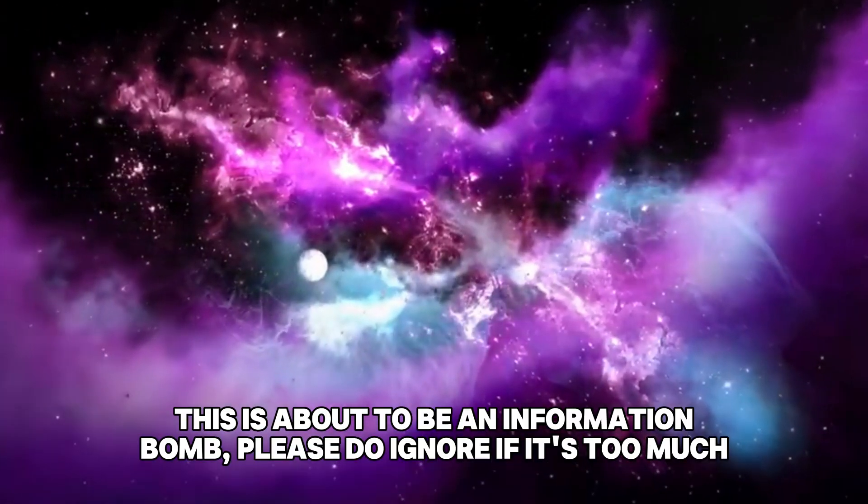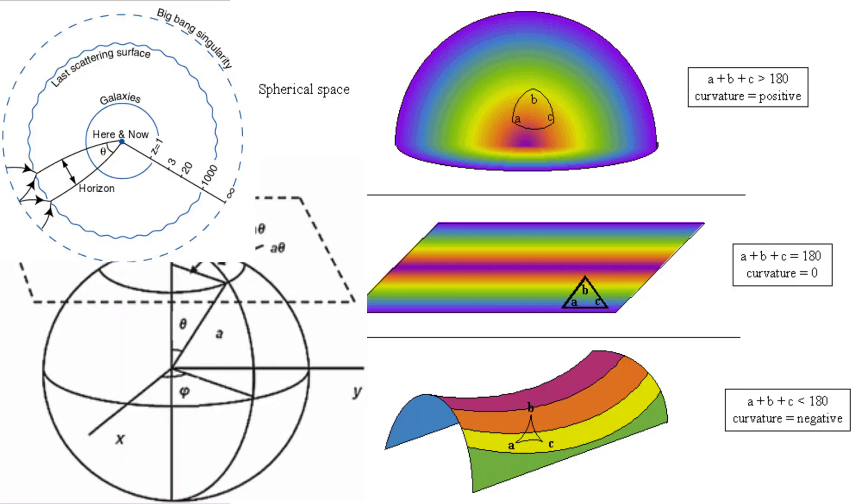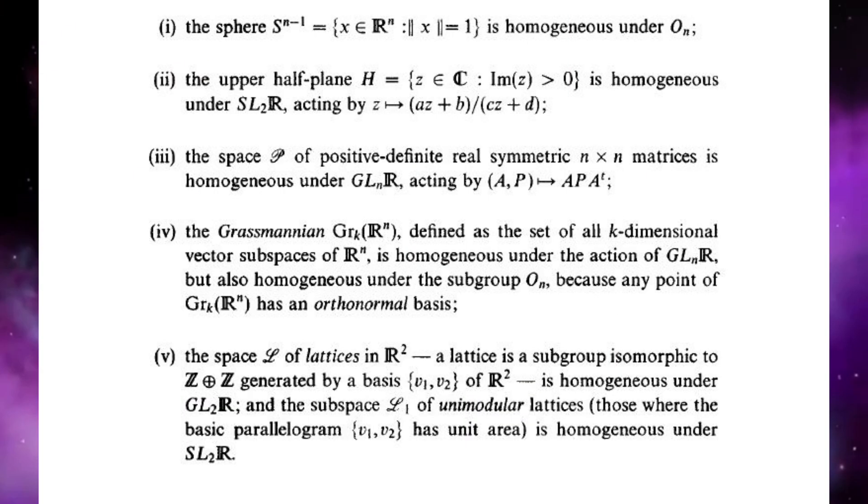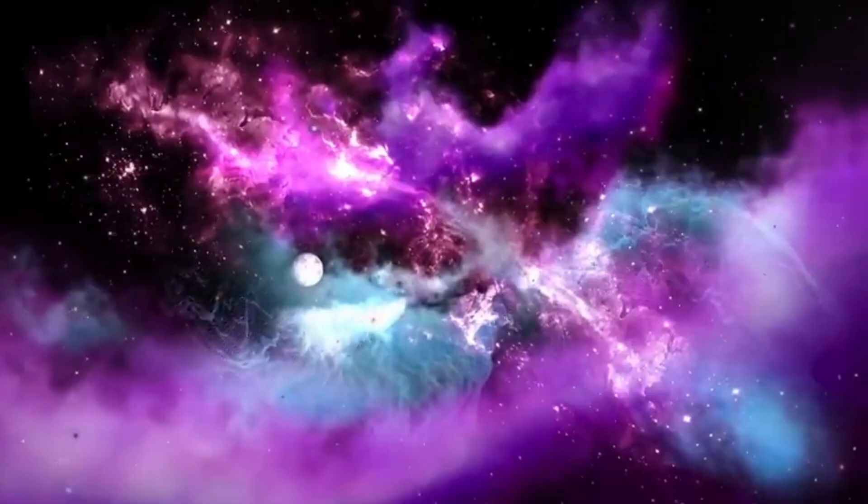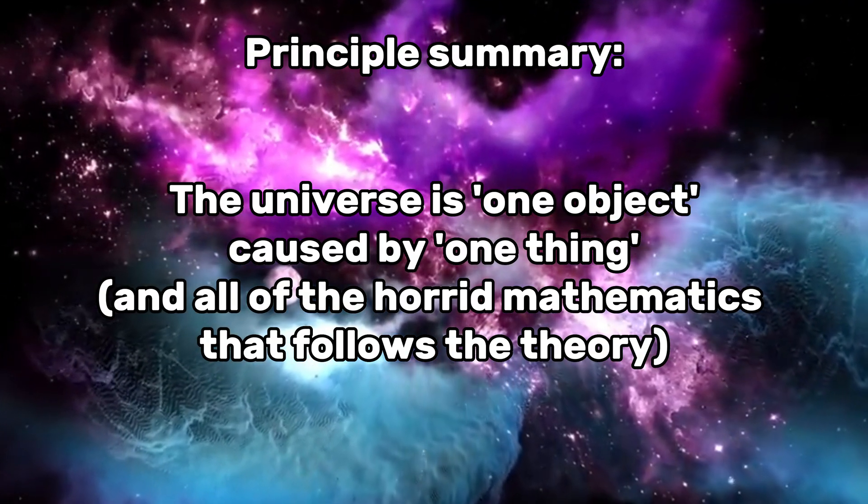And as of now, the best theory we have is the cosmological principle, an assumption of cosmology stating that, on a large scale, the universe is both homogeneous and isotropic. In nicer terms, the cosmological principle basically just says that the universe is one object caused by one thing.